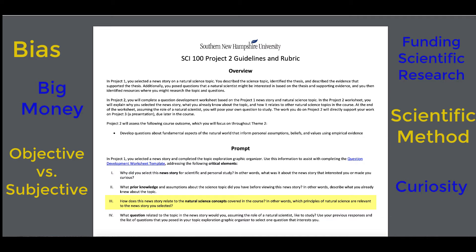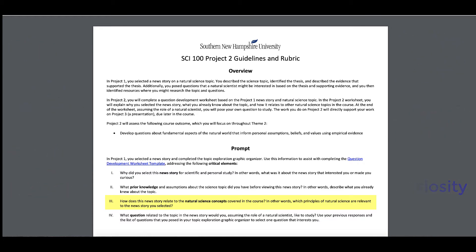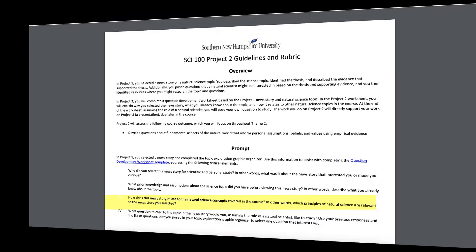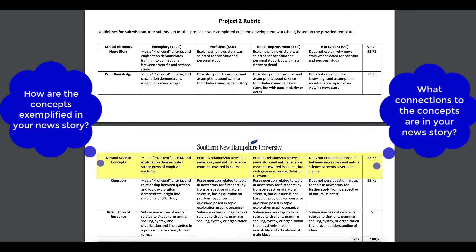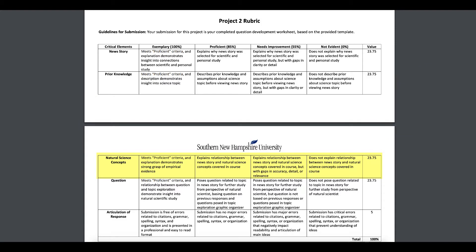This question is not asking for the relevant fields of natural science related to your news story. It wants to know how our concepts in this course are exemplified through your natural science topic and news story. To earn the exemplary level of achievement for this critical element, a demonstration of a strong grasp of empirical evidence is required. How can you relate what you have learned from your news story and science topic to the concepts we have studied in this course so far? Can you make any connections or see any examples of these concepts within your news story?